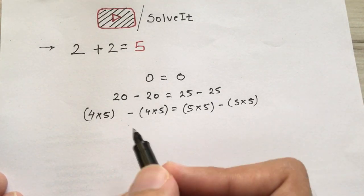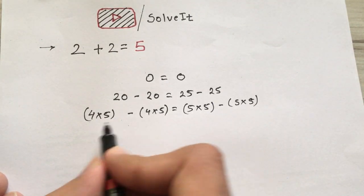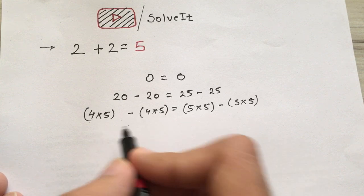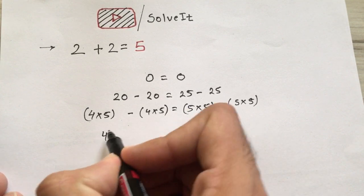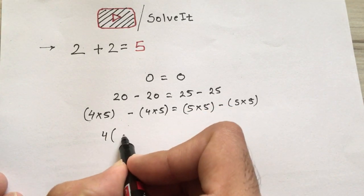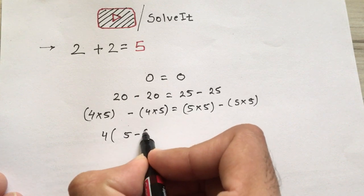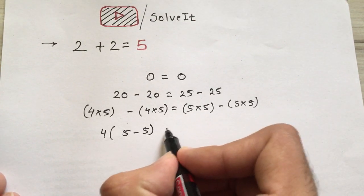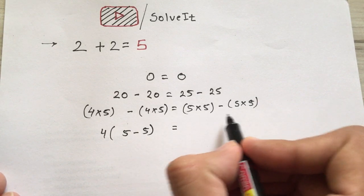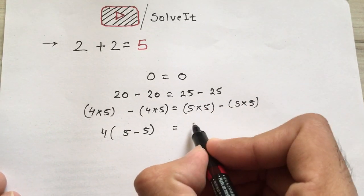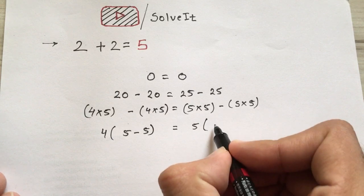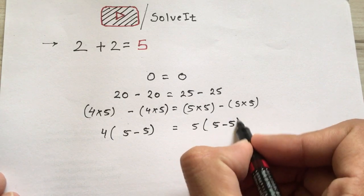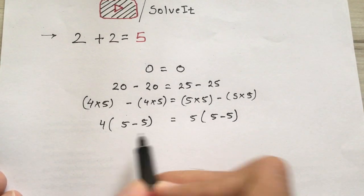So here we haven't violated any rule. Let's see what happens next. Here we can see that 4 is common in both of them, so we take 4 common: 4 times (5 minus 5). We have taken 4 common from both the brackets. Now next, we can take 5 common from both the brackets here: 5 minus 5.